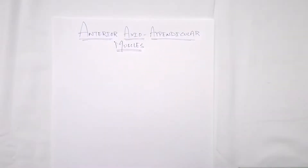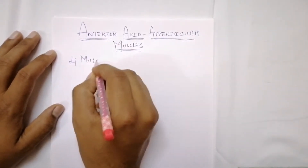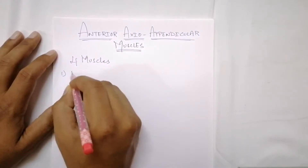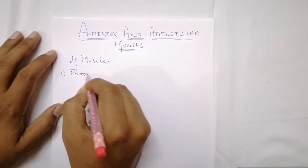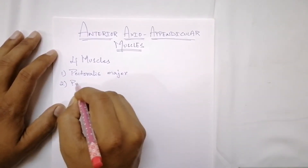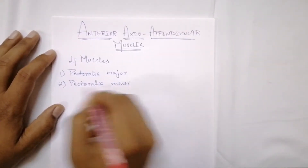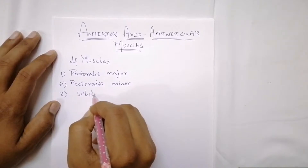Hello guys, welcome to my channel Doc Med School. Today's topic is anterior axio-appendicular muscles. These muscles are also called thoraco-appendicular or pectoral muscles. They are present on the anterior surface of the body, and there are four muscles: pectoralis major, pectoralis minor, subclavius, and serratus anterior.